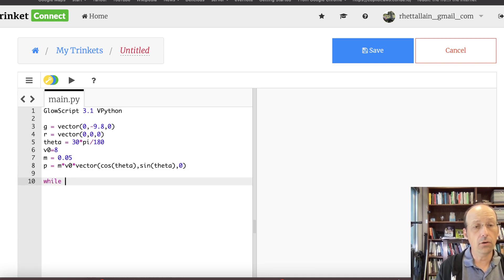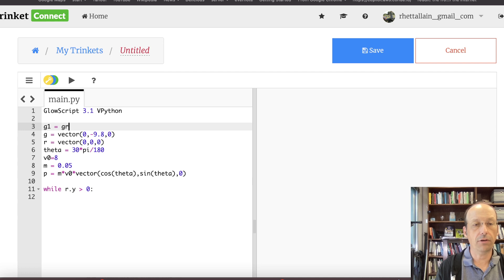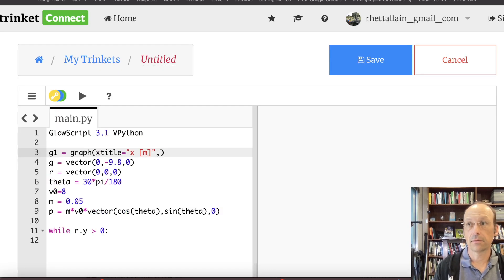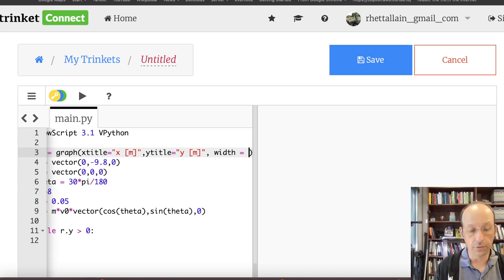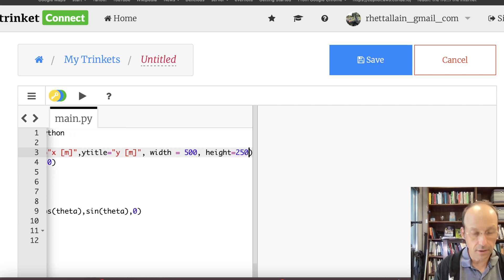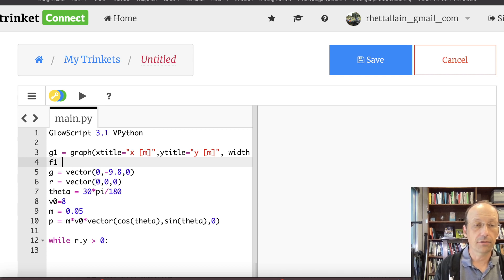Now I can say, while r.y is greater than 0, do the following. I'm also going to need a graph. Let's make a graph. G1 equals graph. Let's do a trajectory because no one cares about time. X title equals X in meters. Y title equals Y in meters. And then let's make it a little bit smaller. So width equals 500, height equals 250. That makes it easier to see. And then F1 is going to be the plot. So it's going to be gcurve color equals color dot blue.